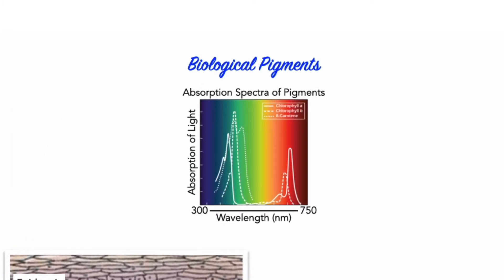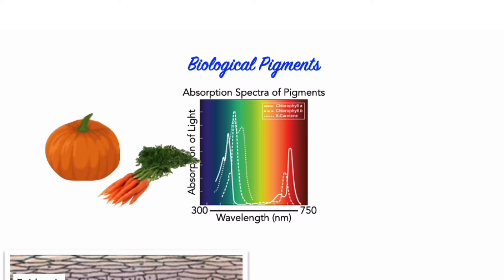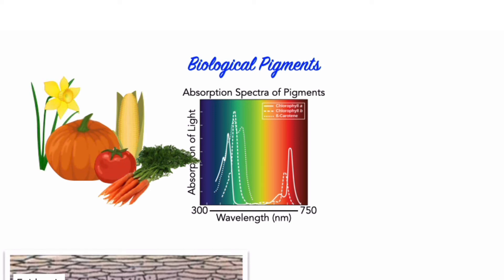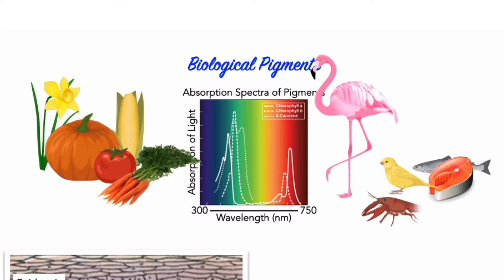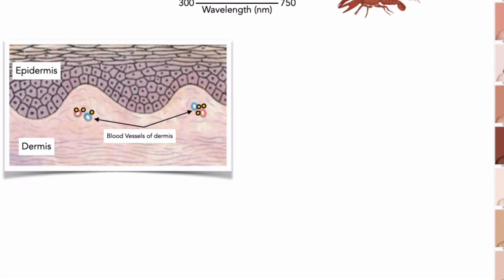Carotenoids, also called tetraterpenoids, are yellow, orange, and red organic pigments produced by plants and algae as well as several bacteria and fungi. These carotenoids give the characteristic color to plant structures such as pumpkins, carrots, corn, tomatoes, and daffodils, and also in animals such as canaries, flamingos, salmon, lobster, shrimp, and aphids.